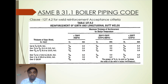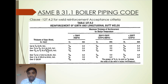As per table 127.4.2, the acceptance criteria for weld reinforcement depends on two things: base metal thickness and design temperature. For base metal thickness up to 3-1/8 inch, if the design temperature is less than 400°C, the maximum reinforcement is 2 mm; at higher temperatures (175–400°C range) it varies. The reinforcement limit changes as both thickness and design temperature change.